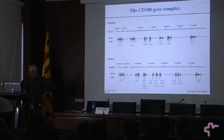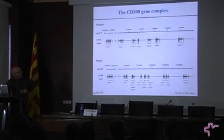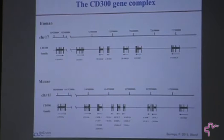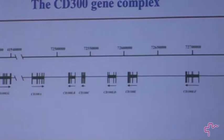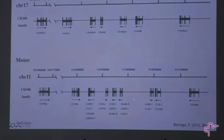The CD300 genes are localized in chromosome 17 in humans, chromosome 11. As you can see here, humans have seven members — six of them are very close to one another, while another one is far away on the chromosome. In the mouse, we have more molecules. We are not going to talk today about the mouse receptor. A little bit about CD300F.